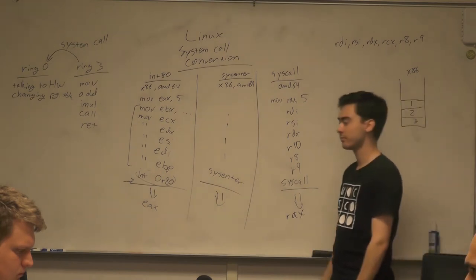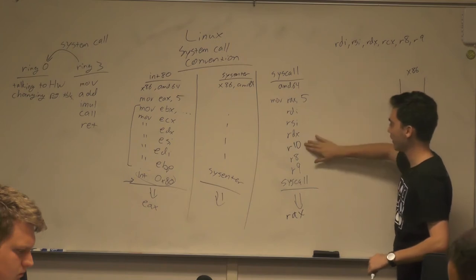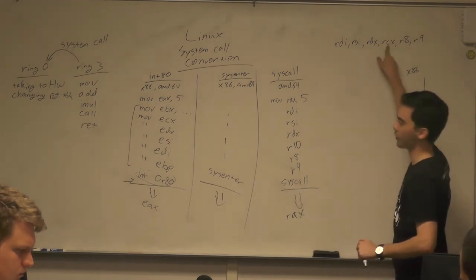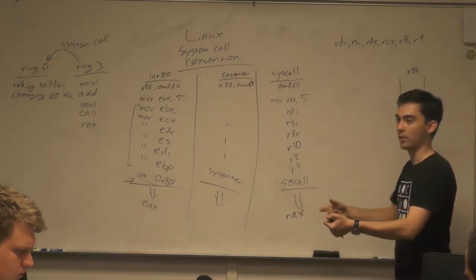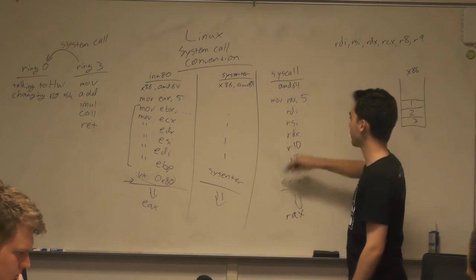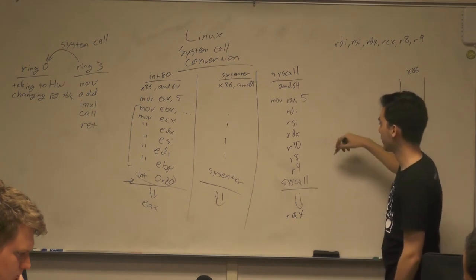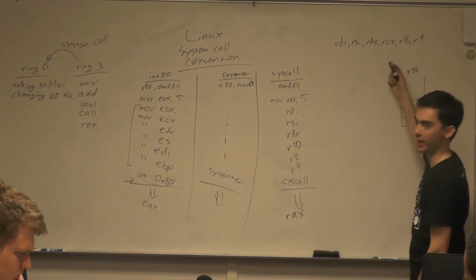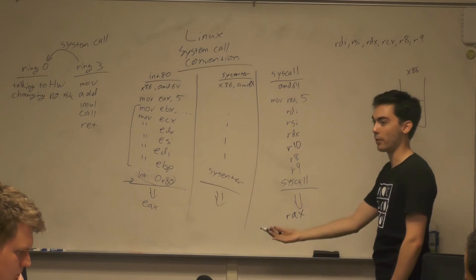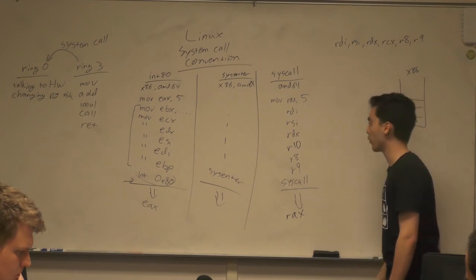Question about R10 and RCX: remember that function calling uses RCX as the fourth register. When you execute a syscall instruction, it saves the instruction pointer in RCX so the kernel can return to the right address. Since RCX is being used to save the return address, we can't pass the fourth argument there. So Linux chose R10 for the fourth argument instead.